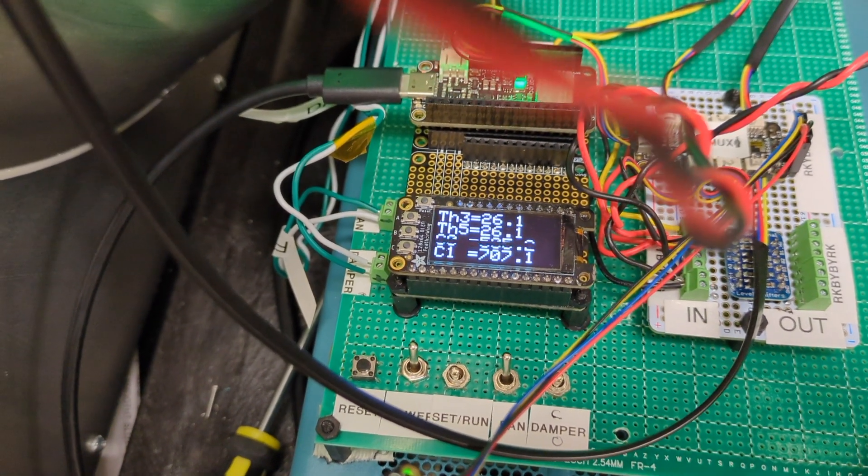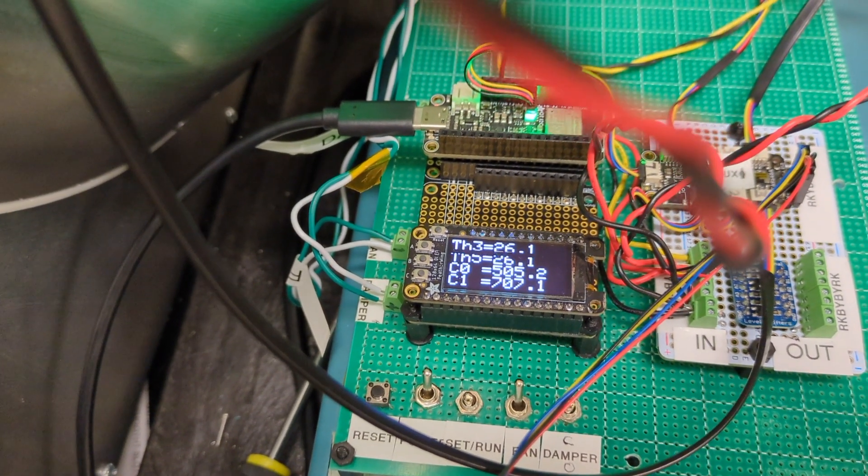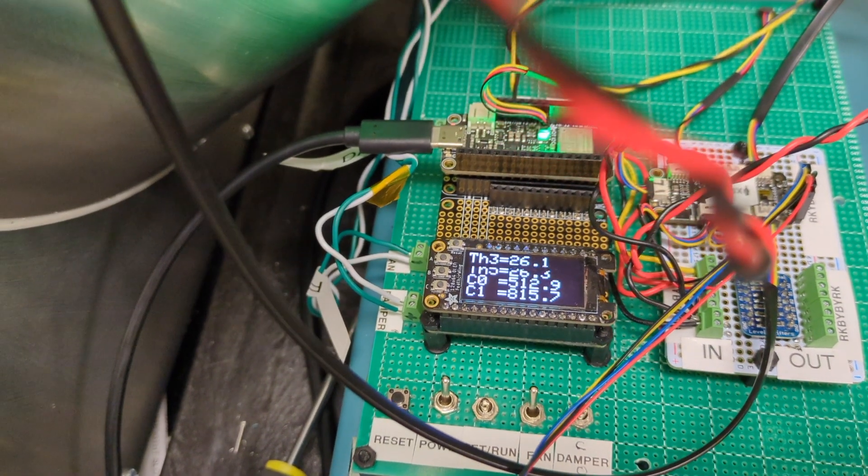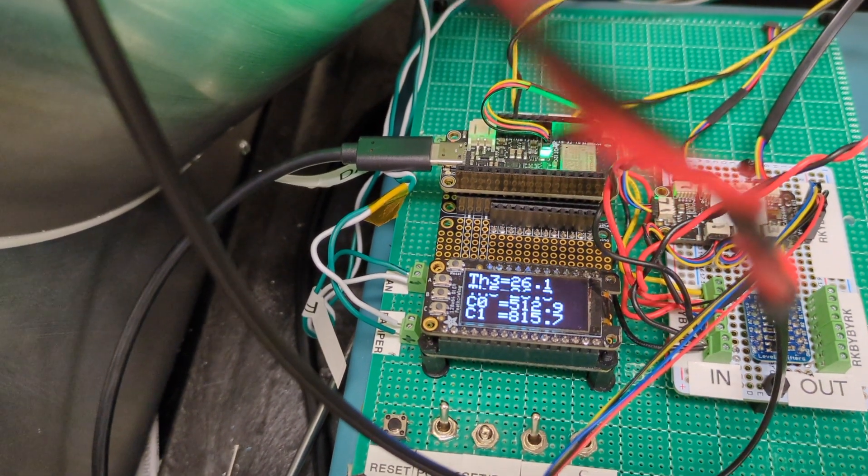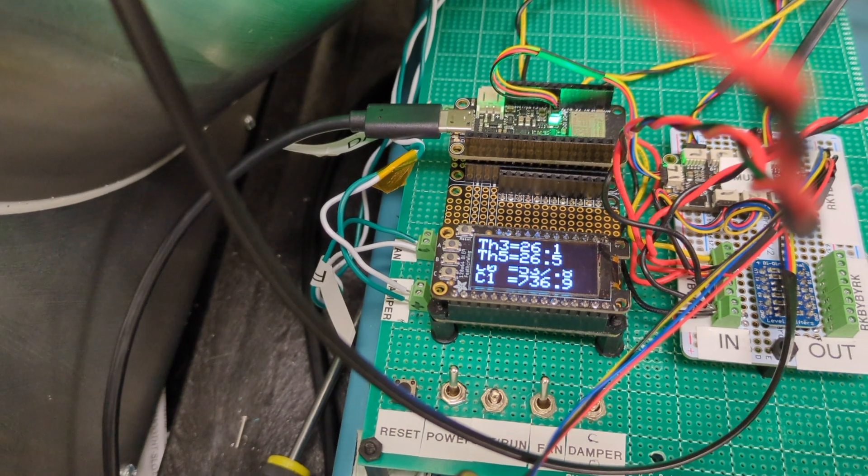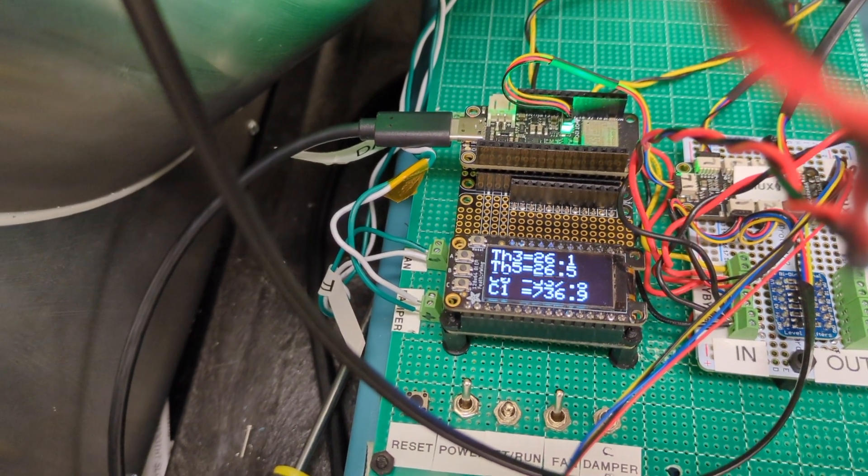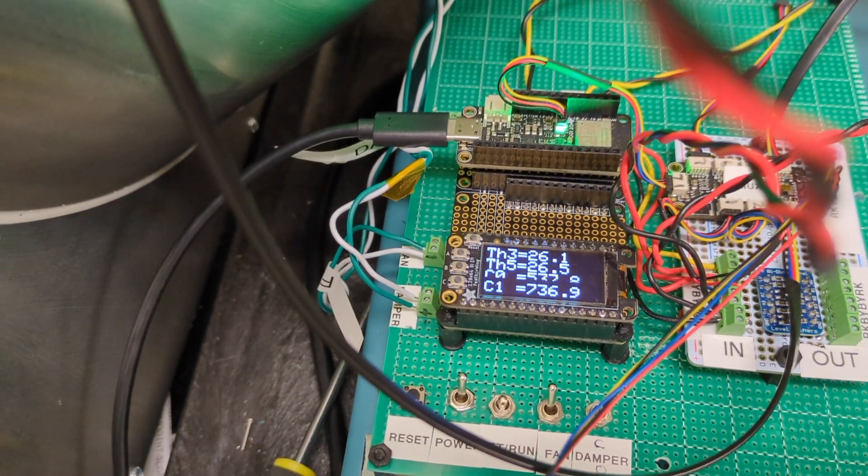So, here's a question. Why is C0 at about 500 and not closer to 420? Because we're indoors here and there are people in here. And they're working hard and they're breathing, talking. It's almost never at 400 or anything. It grows.